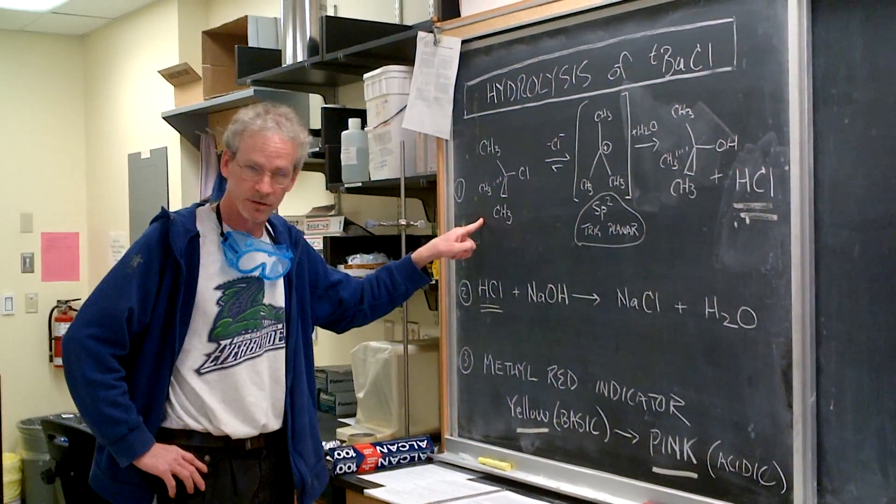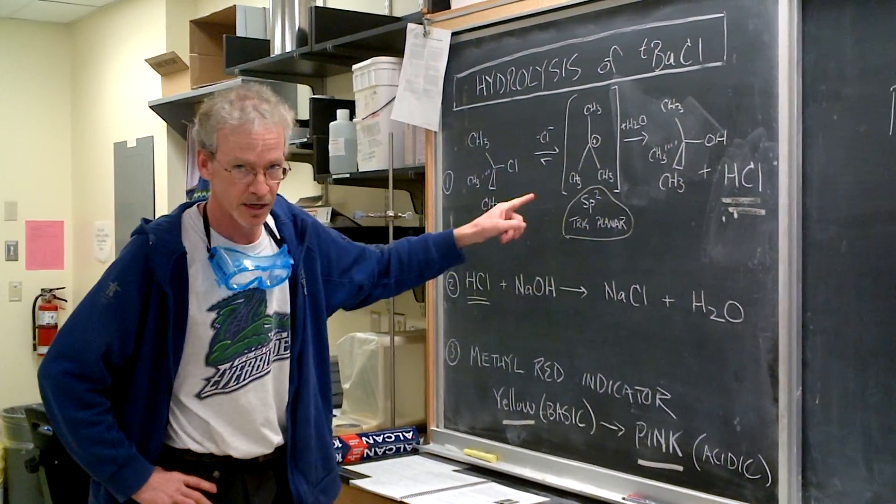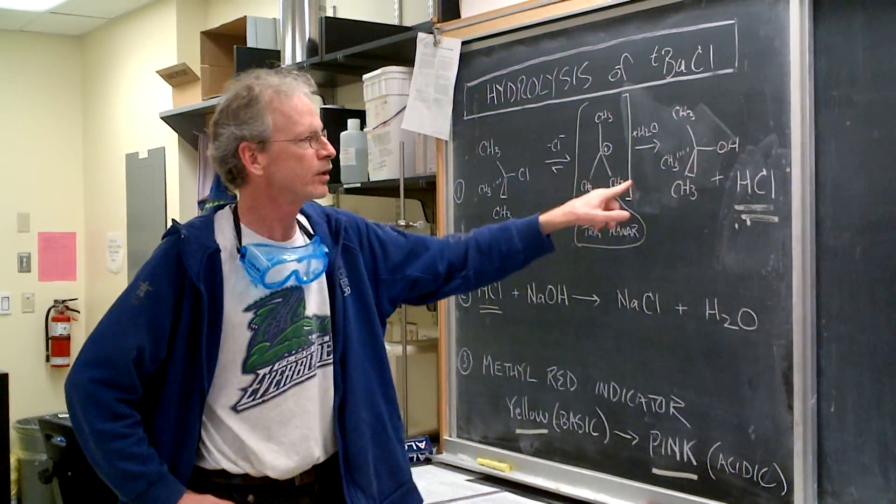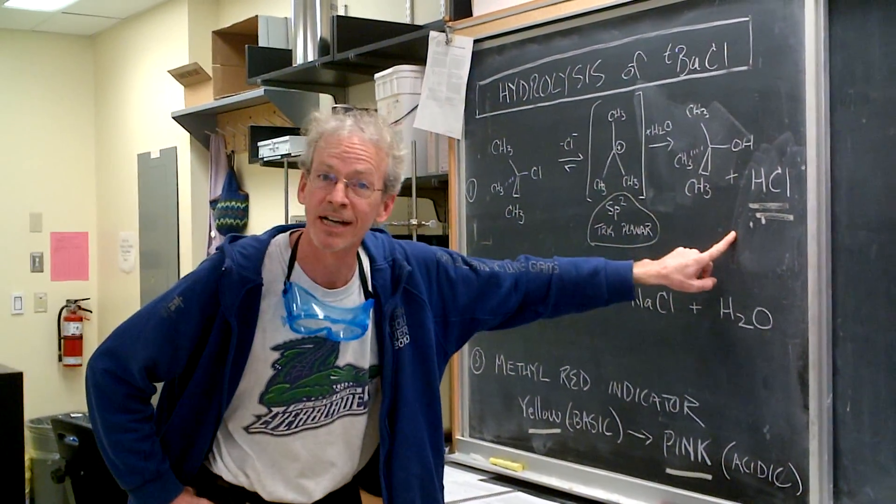The first is the T-butyl chloride falls apart, gives you the sp2 trigonal planar carbocation which very quickly reacts with water to give you the T-butyl alcohol and hydrochloric acid.